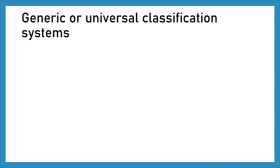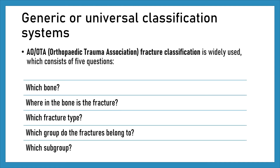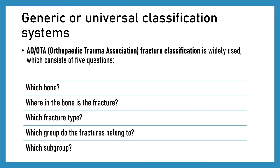Generic or universal classification system: the AO-OTA Orthopedic Trauma Association Fracture Classification is widely used and consists of five questions: which bone; where in the bone is the fracture; which fracture type; which group do the fractures belong to; and which subgroup.